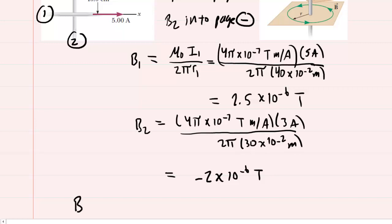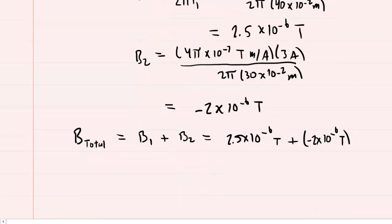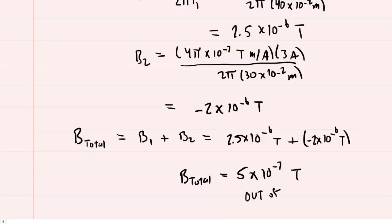The total magnetic field, B total, equals the sum of these two magnetic fields. B1 was positive 2.5 times 10 to the minus 6 tesla, and we add that to B2, which is negative 2 times 10 to the minus 6 tesla. You should end up with a total magnetic field equal to 5 times 10 to the minus 7 tesla. Notice it's positive, and because it came out positive, that means the direction will be out of the page.